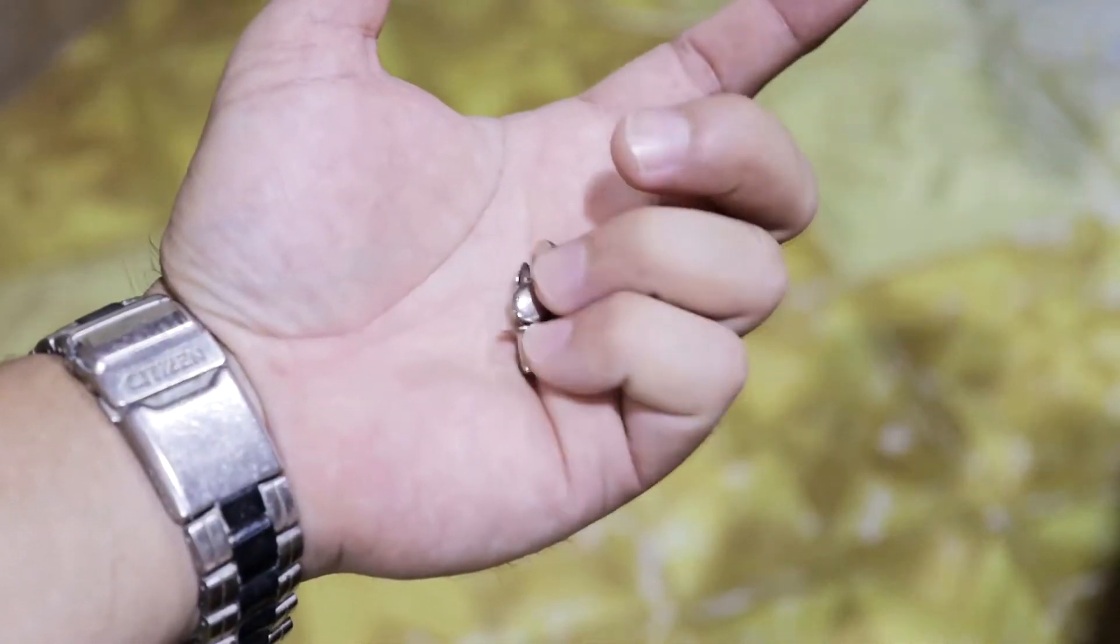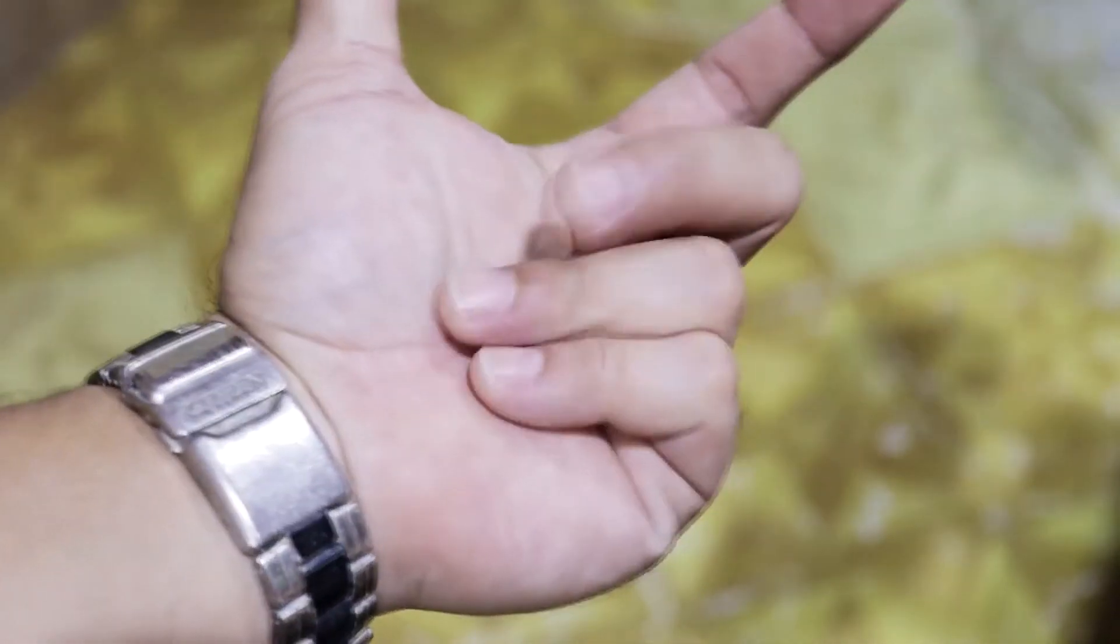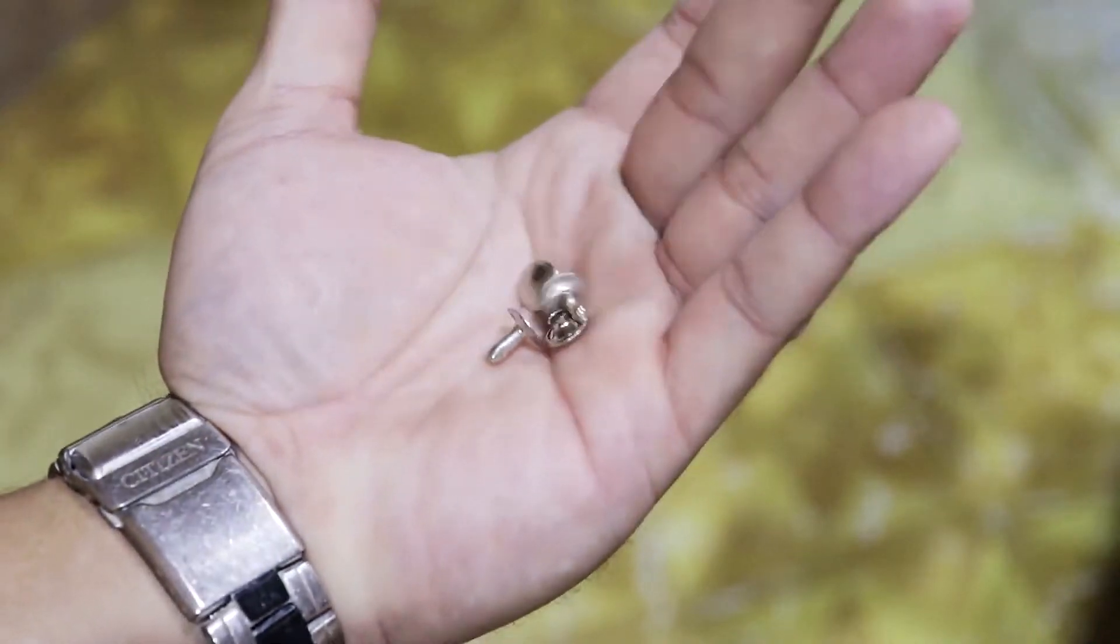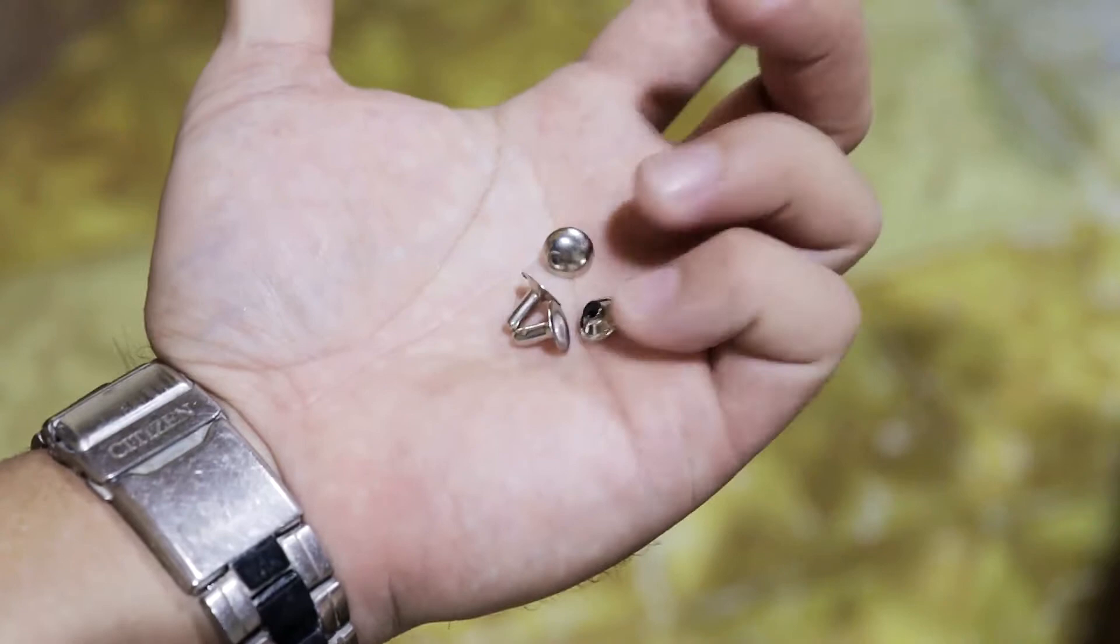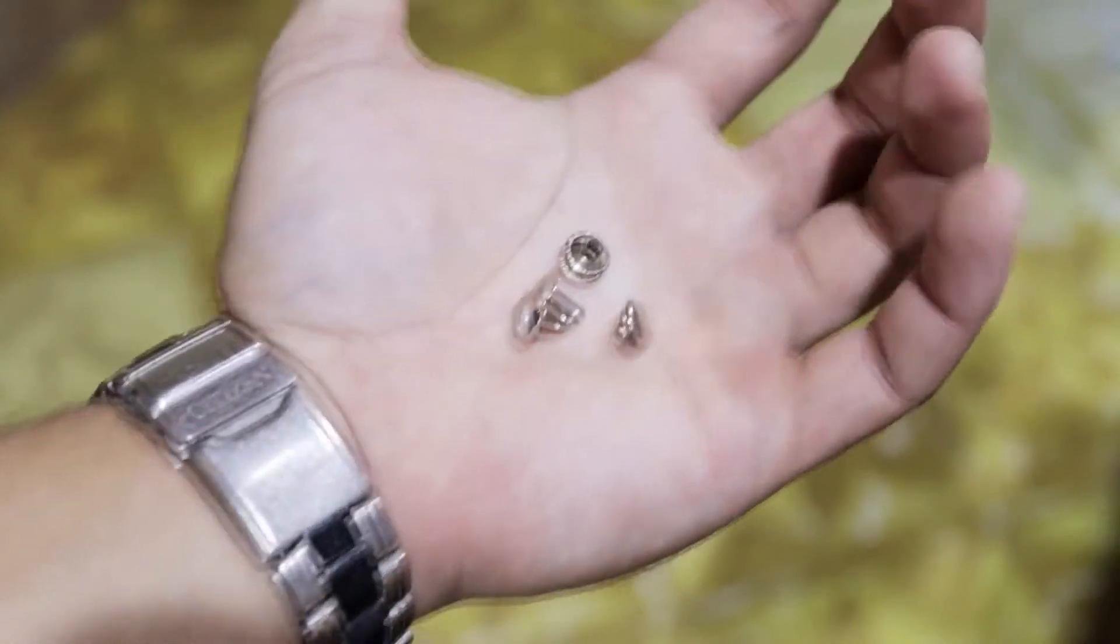I am going to use this type of rivet to join these two components. Since this is metal, this will not break easily. The plastic will break first before this breaks.